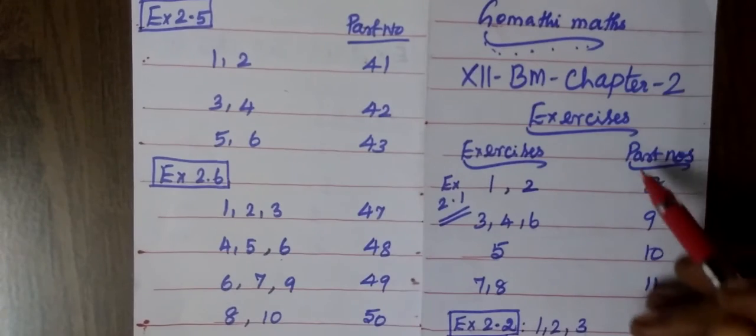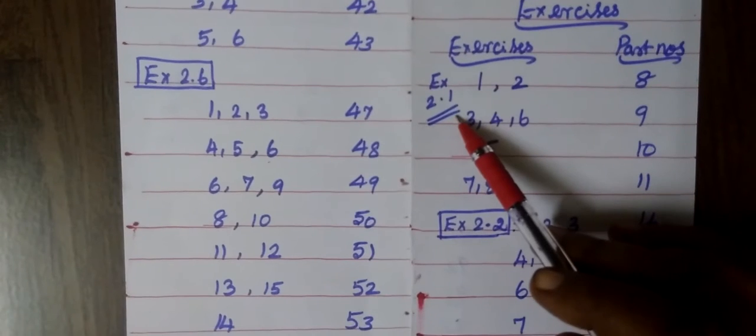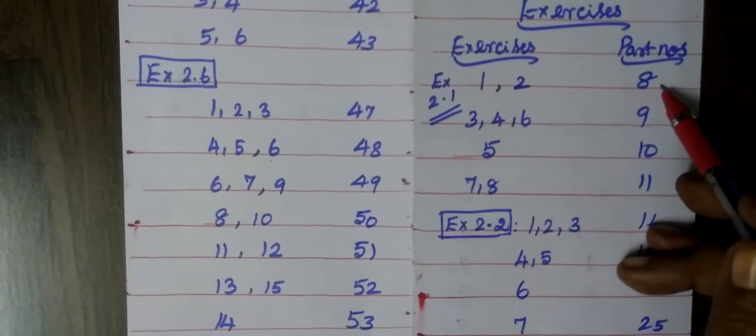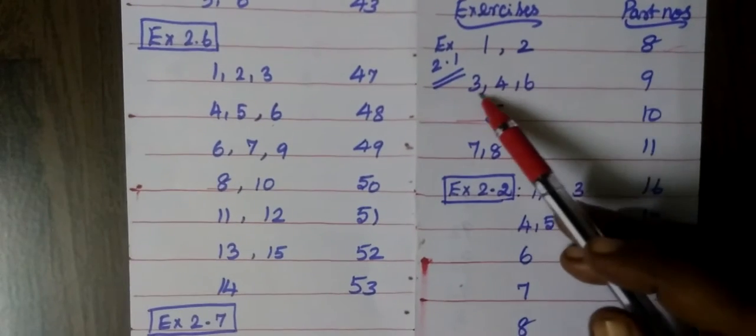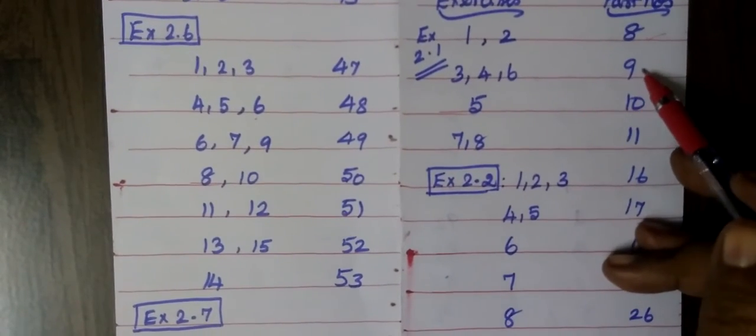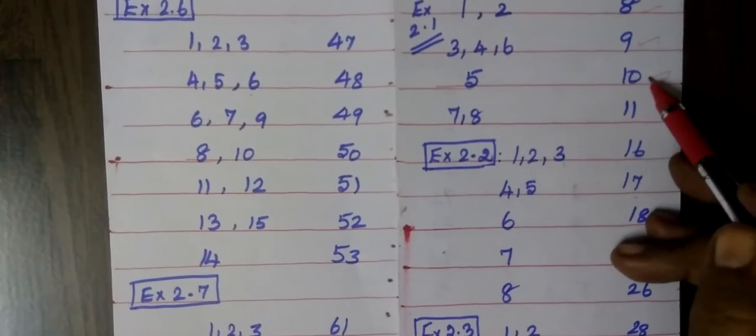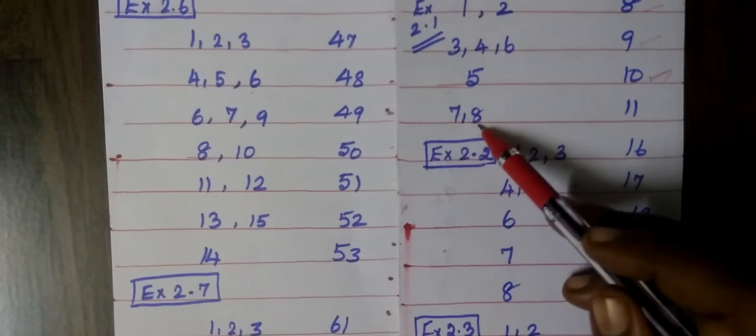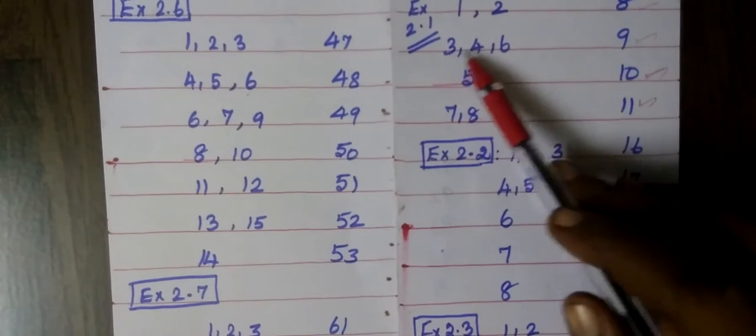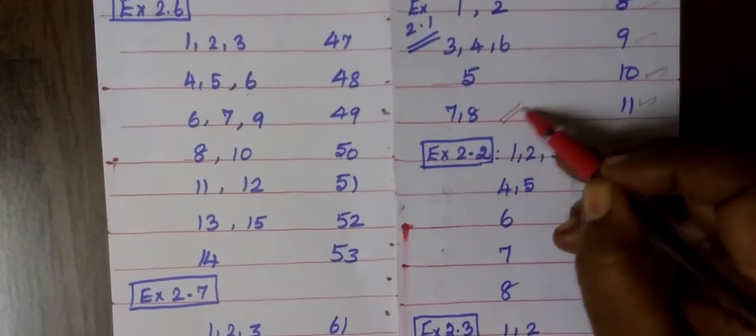You please go through that. Now we see Exercise 2.1. Question number 1 and 2 are in part number 8, then 3, 4, 6 you can see in part number 9, then question number 5 in part number 10, then 7, 8 in part number 11. So Exercise 2.1 has questions 1 through 8.